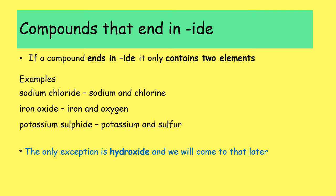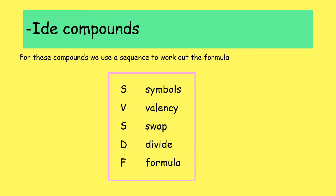There is one exception: hydroxide. Sodium hydroxide contains three elements. But usually if a compound ends in IDE, there are only two elements in it. There is a strategy for writing the formula of these compounds — the SVSDF method. S stands for writing the chemical symbols, V stands for valency, S for swap, D for divide, and F for formula.